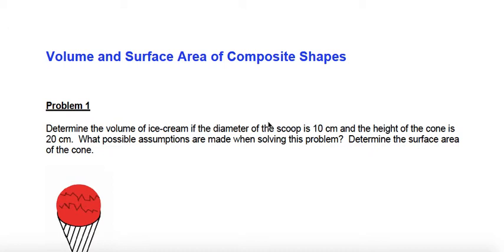Volume and surface area of composite shapes. We spent some time looking at the volume of individual three-dimensional shapes, such as a square-based pyramid, prisms, triangular or rectangular prisms, cones, spheres, and so on. Now we're going to take a look at some real-life examples of the combinations of those three-dimensional shapes.